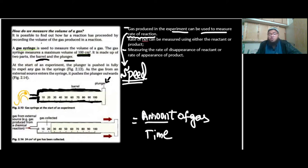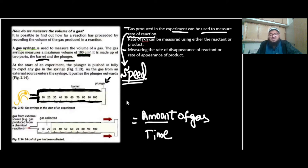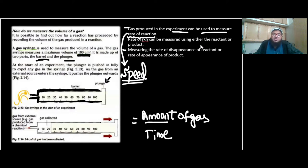Amount can be in volume or in moles — we will talk about moles in more detail later. For now, just remember: it's the amount of gas per unit time, and that is the rate. The more gas produced per unit time, the greater the rate; the less gas produced per unit time, the lesser the rate. Unit generally refers to one second of time, so the amount of gas produced in one second gives you the rate of the reaction.